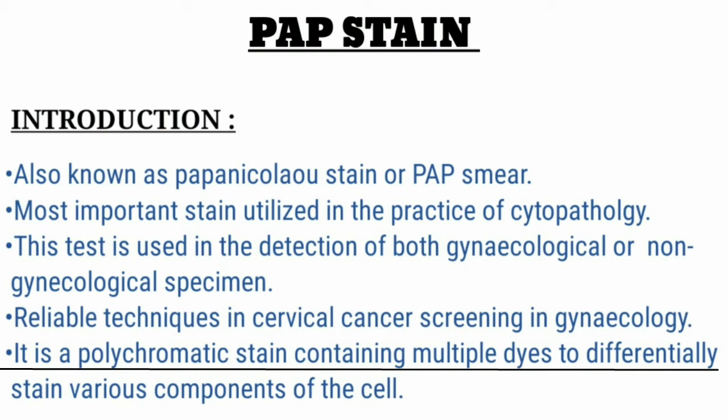Pap stain is a polychromatic stain containing multiple dyes to differentially stain various components of the cell. It uses five dyes which stain the various cellular components.